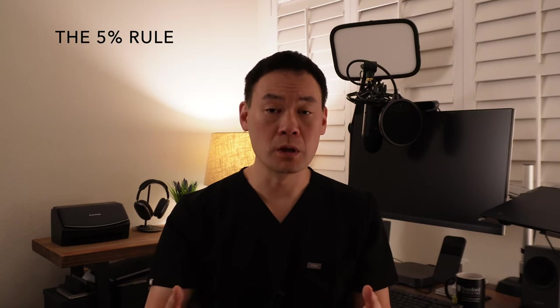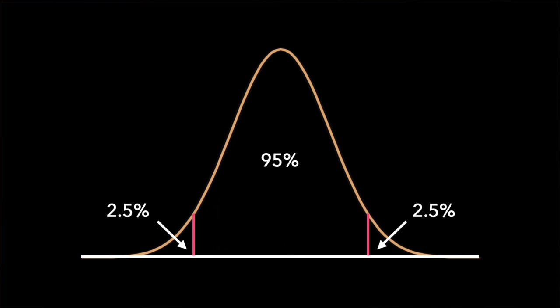Also emphasize the wisdom of the 5% rule. Most definitions and concepts of normal are based on Gaussian distributions and what's within two standard deviations of the mean. That means that 5% of the time, something normal may not fit within our concept or definition of normal.